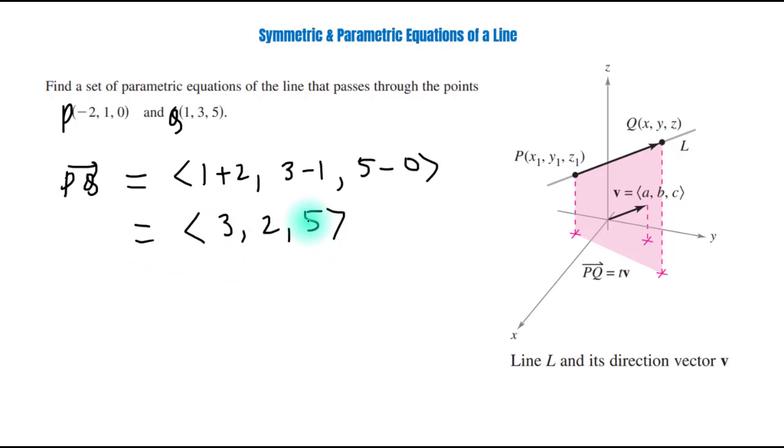So, this is direction vector equivalent to saying vector v. So, now we will find a line which passes through P and parallel to vector v.